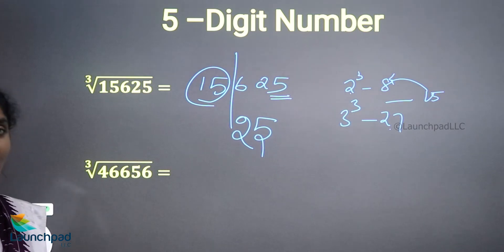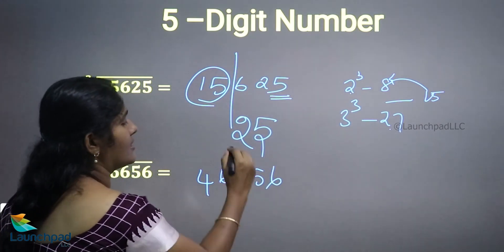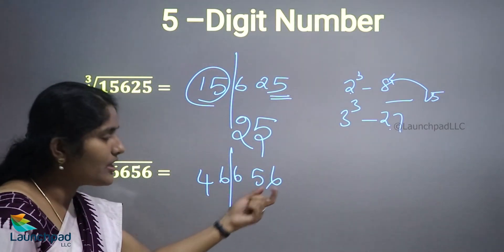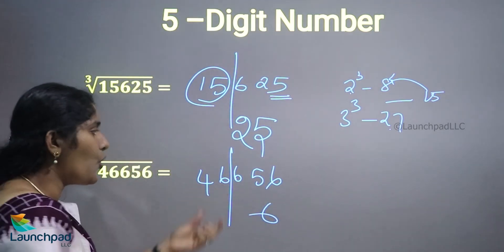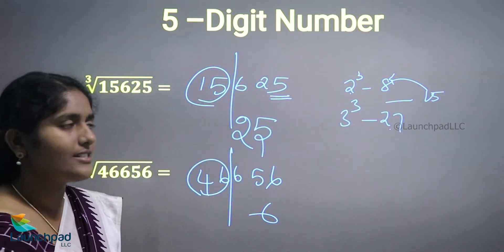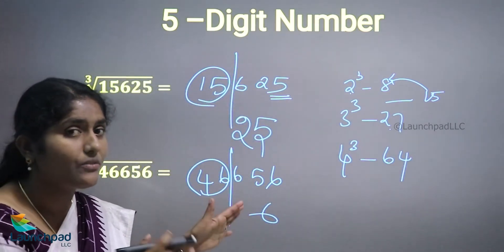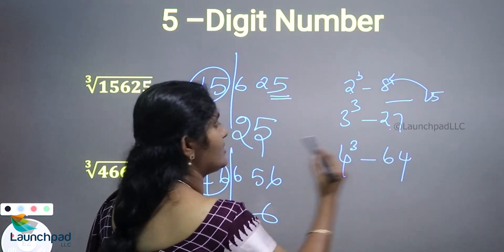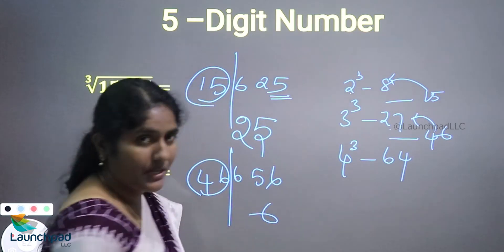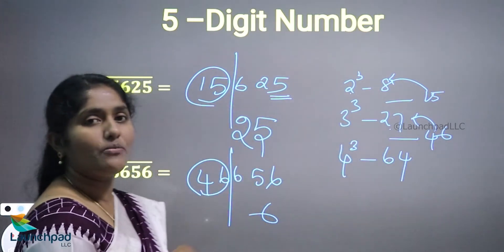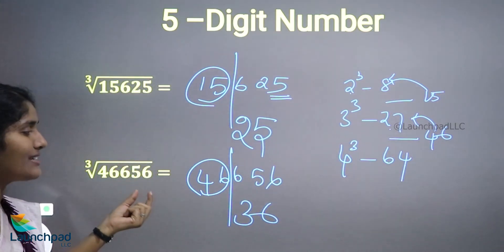Next example: cube root of 46656. The unit digit is 6, so the unit digit of the answer is 6. The first part is 46. You should memorize cube answers from at least 1 to 10. Now 46 lies between 27 (3 cubed) and 64 (4 cubed). We take the previous value, 27, corresponding to 3 cubed. So the first digit is 3. The cube root of 46656 is 36.